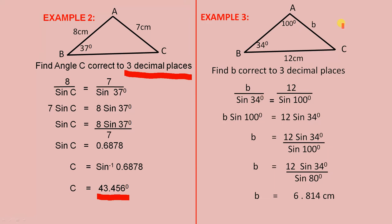Third example. Find b correct to three decimal places. b over sine 34 equals 12 over sine 100.